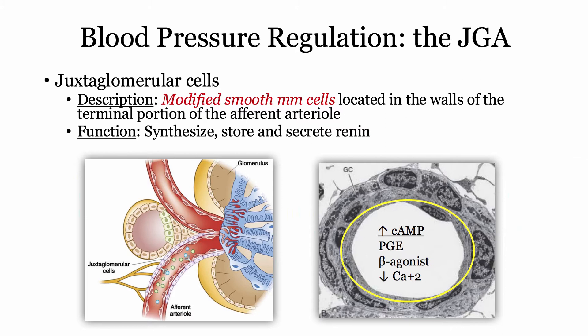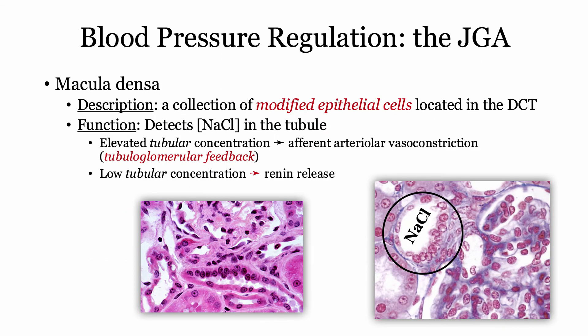Renin release is a cyclic AMP-mediated process. Prostaglandins and beta-agonists are two key triggers. Also, in a process referred to as the calcium paradox, a decreased intracellular calcium concentration triggers renin release. This is interesting, but irrelevant to your purposes.